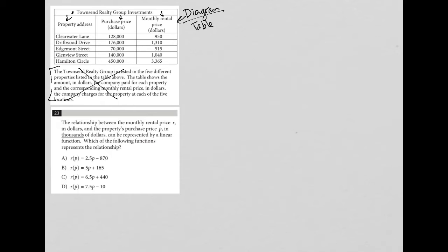So question 23 says the relationship between the monthly rental price R in dollars and the property's purchase price P in thousands of dollars can be represented by a linear function. Which of the following functions represents the relationship?